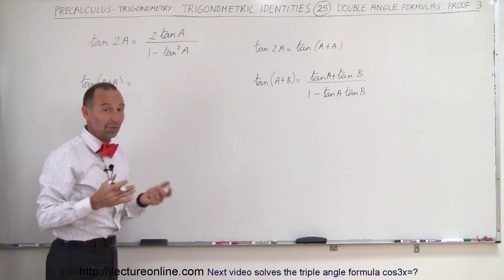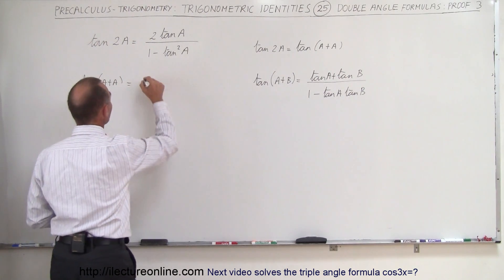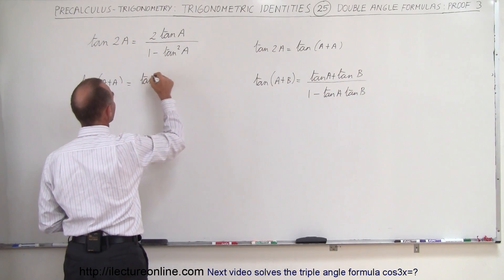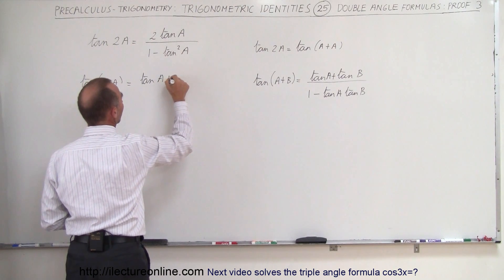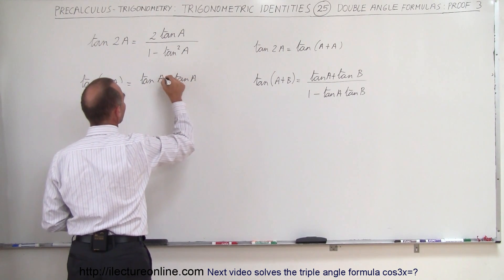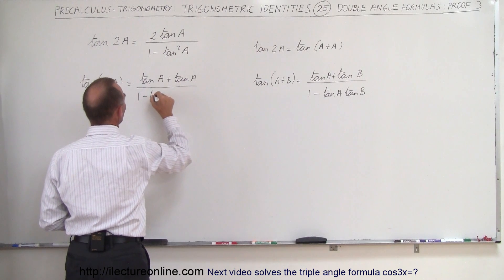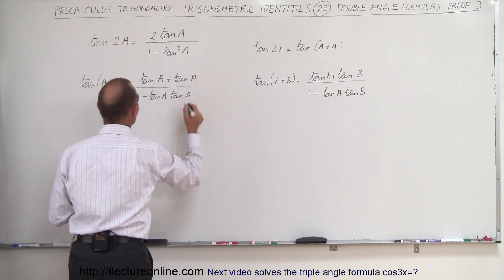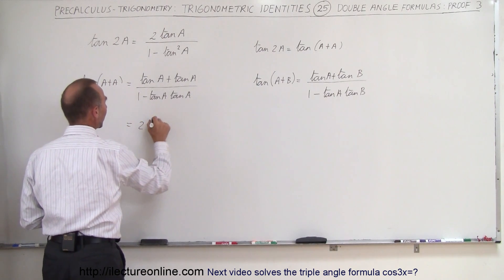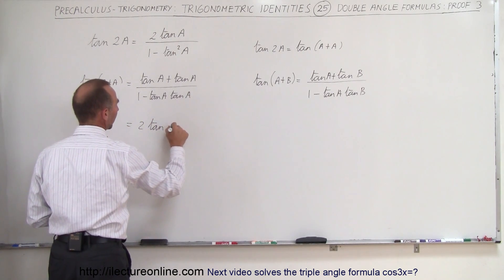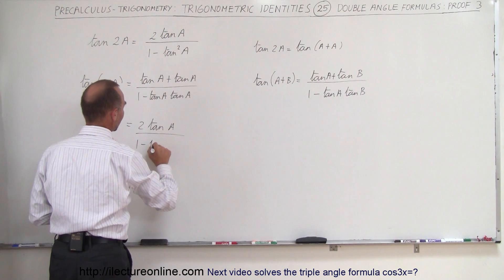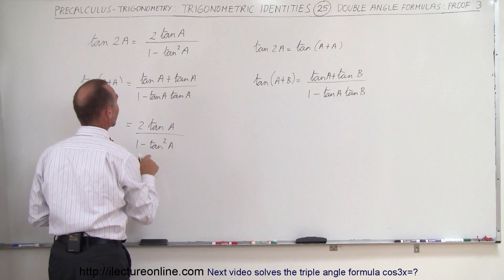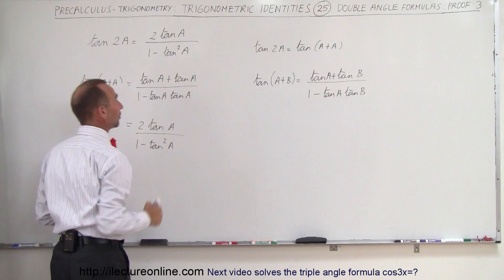So instead of writing tangent of b, we'll write tangent of a, and so this becomes the tangent of a plus the tangent of a divided by 1 minus the tangent of a times the tangent of a. And of course, if we simplify that, we get 2 times the tangent of a in the numerator and 1 minus the tangent squared of a in the denominator, which is exactly the same as what I have over there.